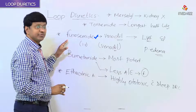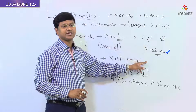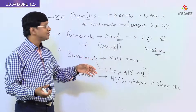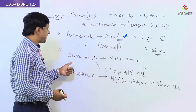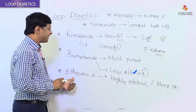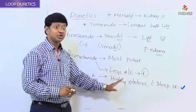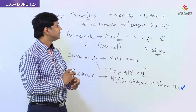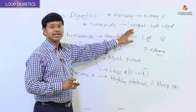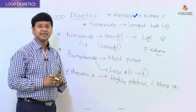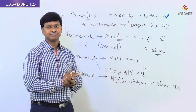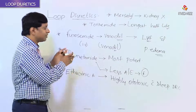To summarize the individual loop diuretics: Furosemide, given intravenously, is very useful in left ventricular failure and pulmonary edema — patients get quick relief due to its vasodilatory action. Bumetanide is the most potent loop diuretic and has lesser adverse effects than furosemide. Ethacrynic acid is highly ototoxic with a steep dose-response curve. Torsemide has the longest half-life among all loop diuretics. Mersalyl is a loop diuretic no longer used due to risk of kidney damage.